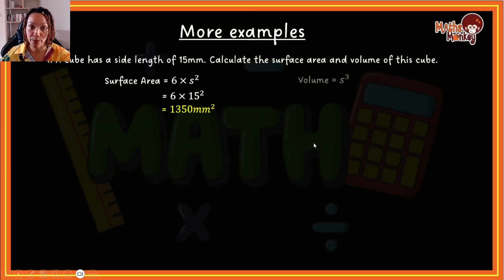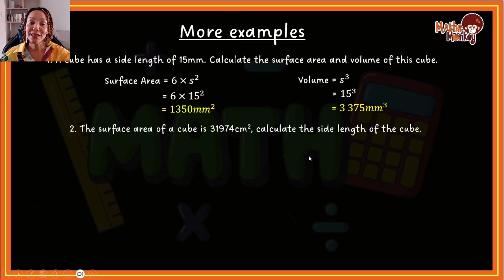Now let's do the volume for this cube. So again, we start off with the formula. It's side to the power of 3. And in this case, the side's length is 15. So I just substitute that in, 15 cubed will give me 3,375 millimeters cubed. Right. Let's look at the next example.